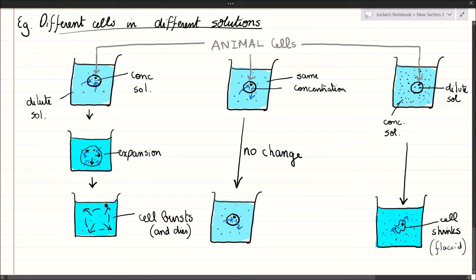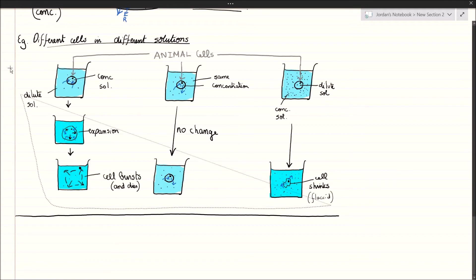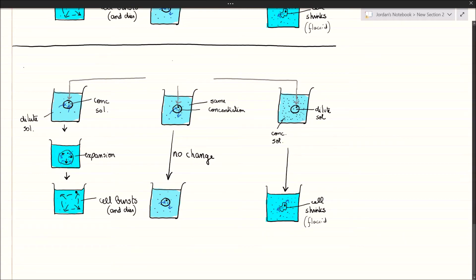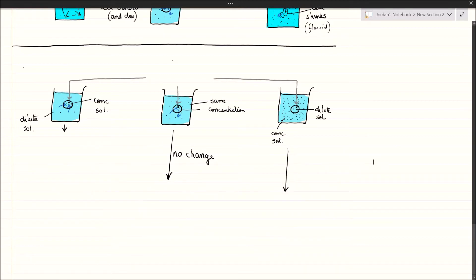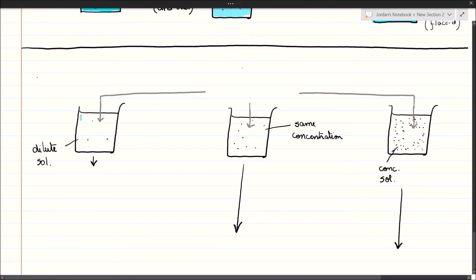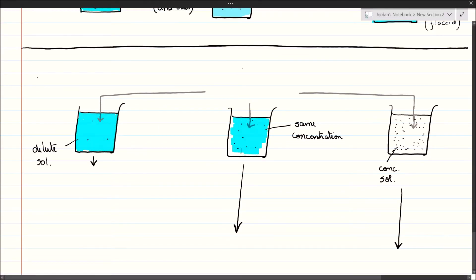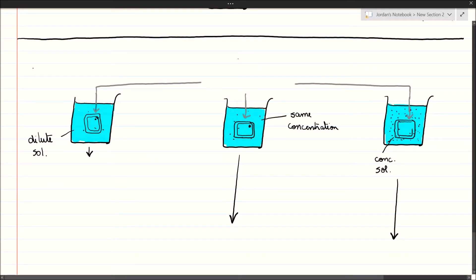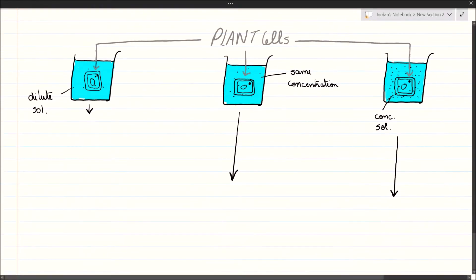The story is rather different for plant cells. Plant cells, besides having a cell membrane, also have a cell wall made up of cellulose — a strong, rigid material. The cell wall is fully permeable so it won't stop water from going through, but the cell membrane of plant cells, just like that of animal cells, will only allow water through and not sugars or salts. Let's see what happens to three plant cells placed in three different solutions of different concentrations.